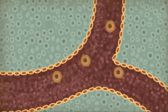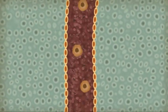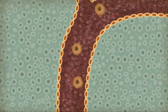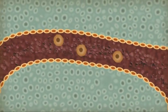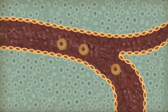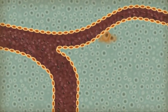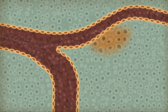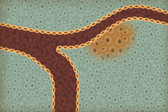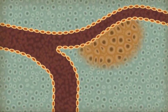If a tumor cell enters the vascular system, it can circulate in the vascular system and may eventually attach to a vessel wall at some remote location in the body, and eventually invade the local tissue and seed a secondary site.